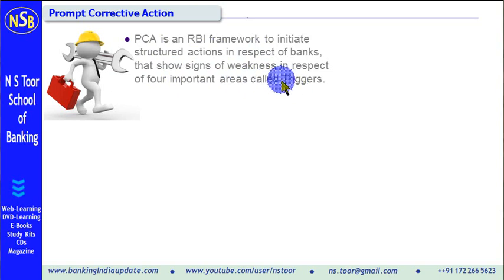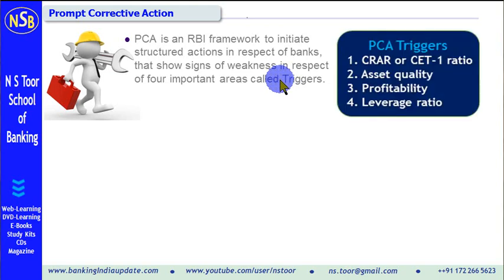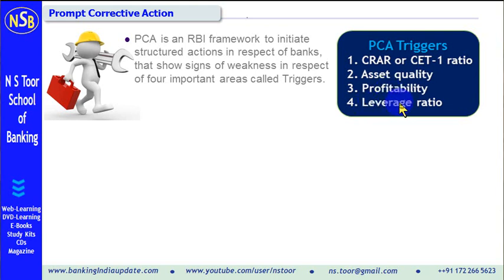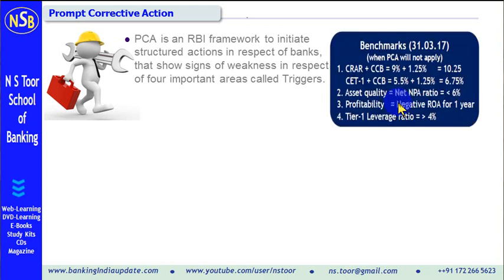These four important areas are known as the triggers for Prompt Corrective Action. The first trigger relates to Capital Adequacy Ratio or Common Equity Tier 1 ratio. The second one is asset quality, that is the level of net NPAs. The third one is profitability, which relates to return on assets ratio. And the fourth one is the leverage ratio.